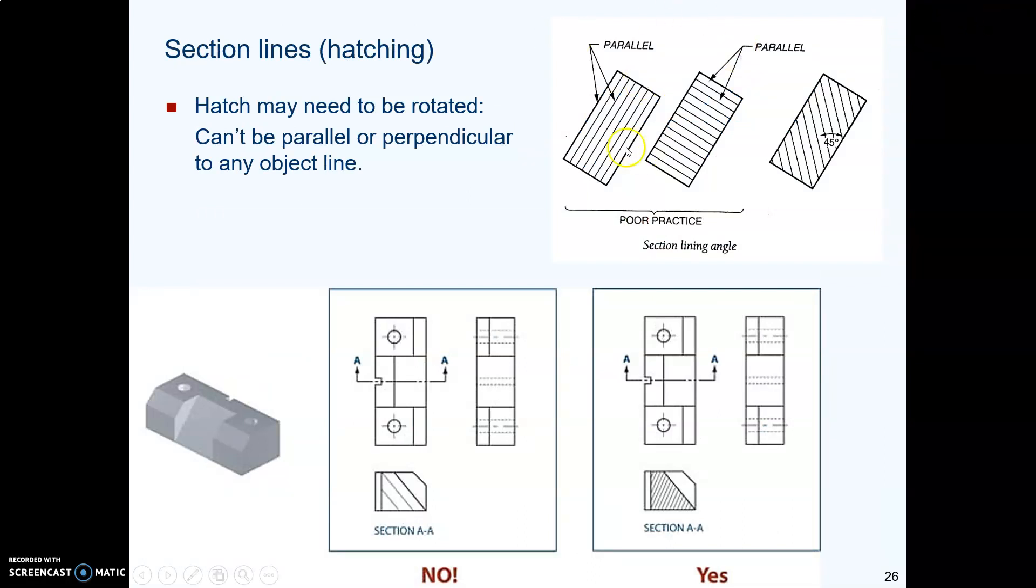Now, if you have a part that happens to be sitting at a 45 degree angle, you cannot have your hatching at a 45 degree angle because the hatch lines would be parallel with the part edges. And somebody might think, oh, what is this? A bunch of heat fins or what are those things that are part of the part? So what you do is you rotate your hatch pattern a little bit so that it's at a different angle than the edge of the part.